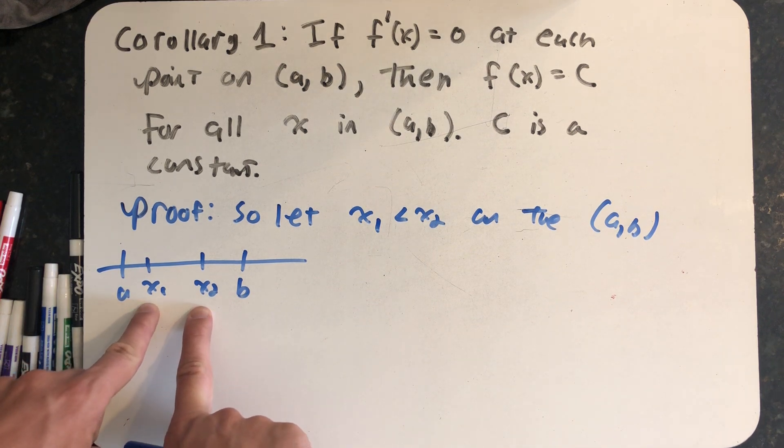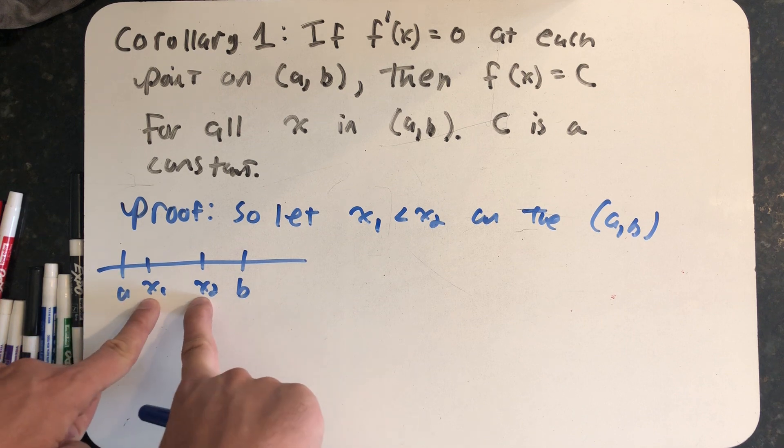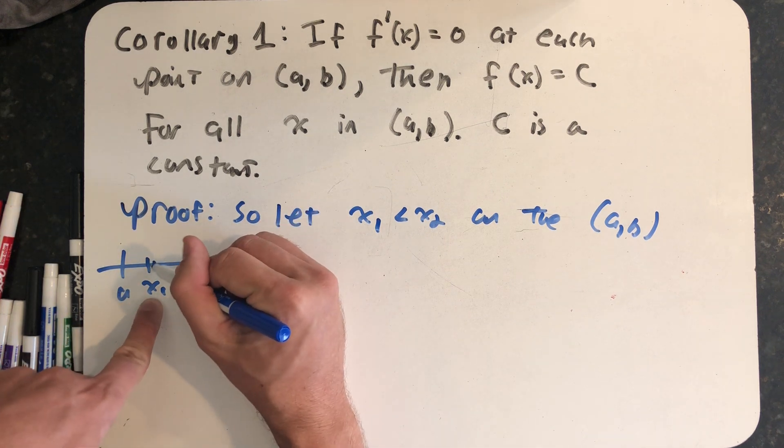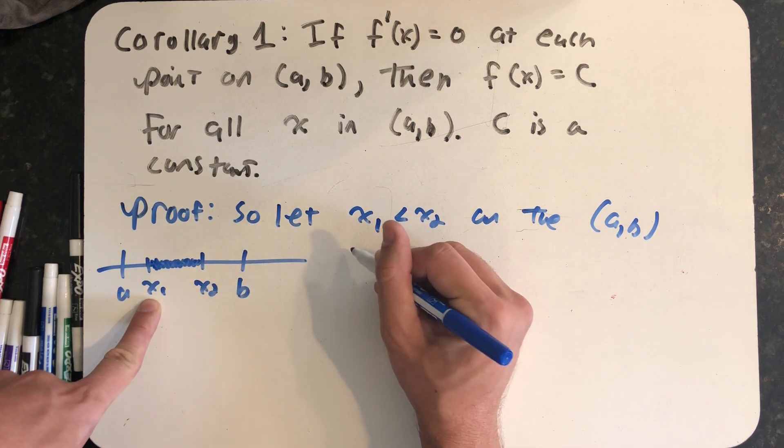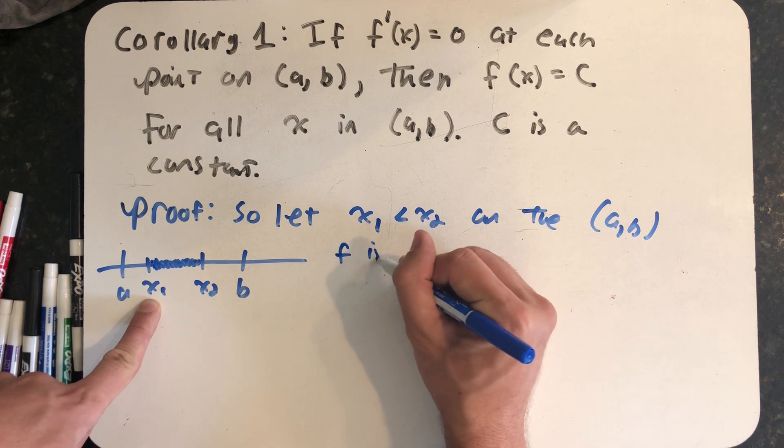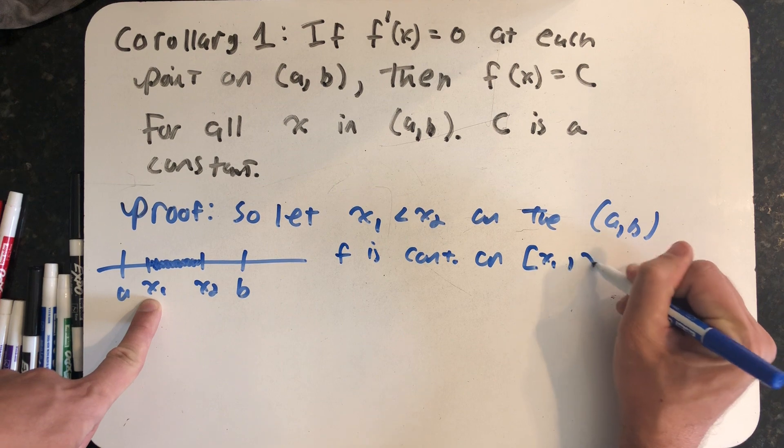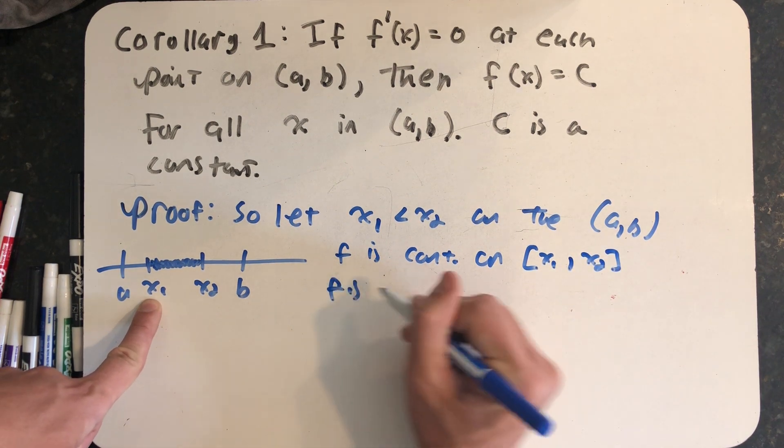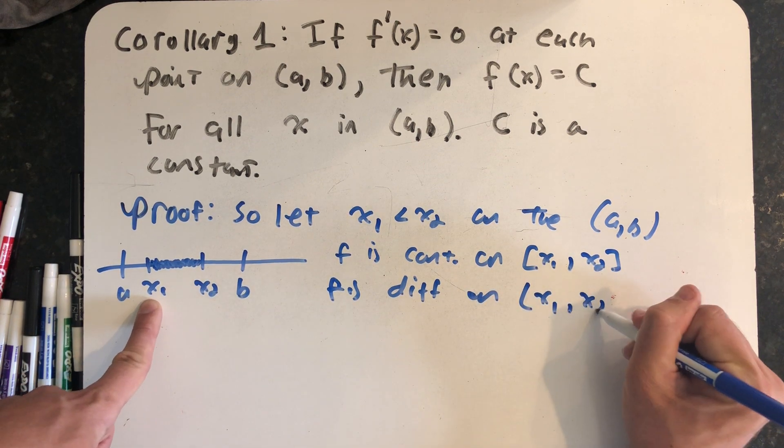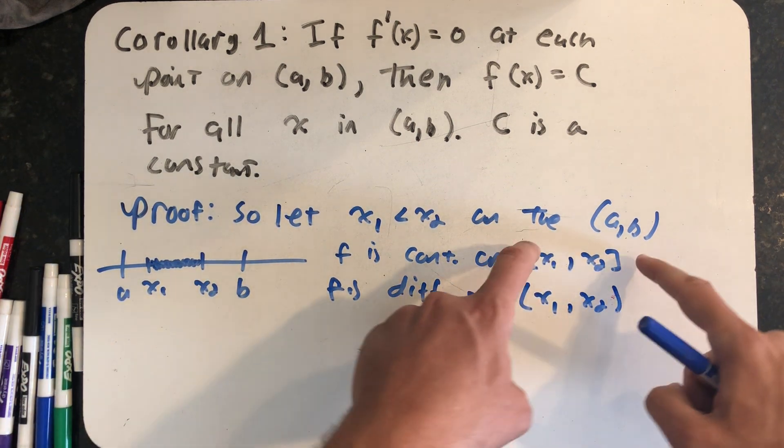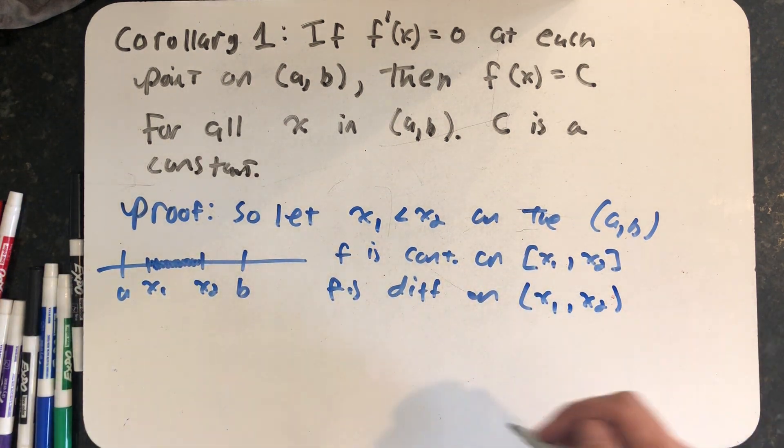Well, differentiability implies continuity. So I know my function is continuous at x1 and x2, and I happen to know that the derivative exists and is zero for all of the points on the interior. So what I know is that f is continuous on the closed interval [x1, x2], and f is differentiable on the open interval (x1, x2). So on this slightly maybe smaller interval than (a, b), I have met the requirements of the mean value theorem.